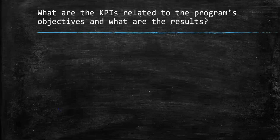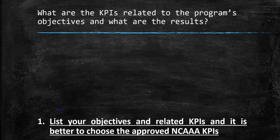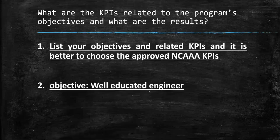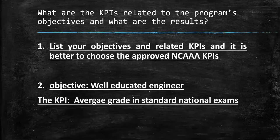What are the KPIs related to the program's objectives and what are the results? List your objectives and related KPIs — it is better to choose the approved NCAAA KPIs. For example, if you have an objective about producing well-educated engineers, the KPI could be the average grade in standard national exams. If you have four objectives, you can link one objective to one, two, or three KPIs, and some KPIs should be measured after graduation of students.